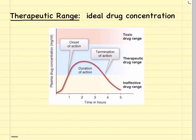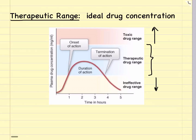Now let's look at the therapeutic range of a drug — the ideal drug concentration in the body. Drug concentration can be measured in the plasma, urine, or sometimes the CSF. This graph demonstrates plasma drug concentration versus time in hours. A drug level below the therapeutic range is ineffective, within the therapeutic range it has the desired effects on the body, and above which the effects become toxic.